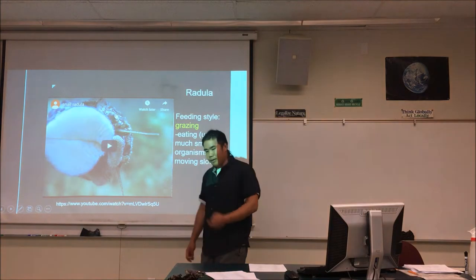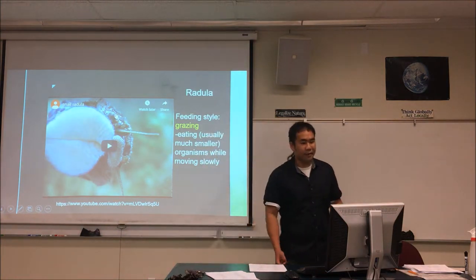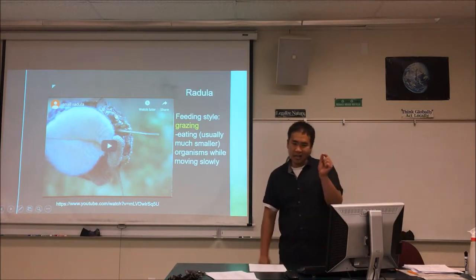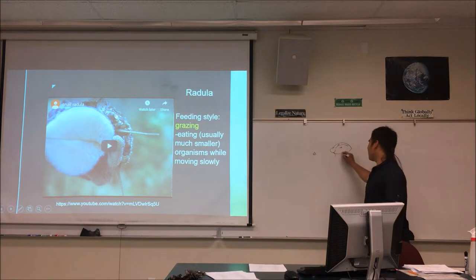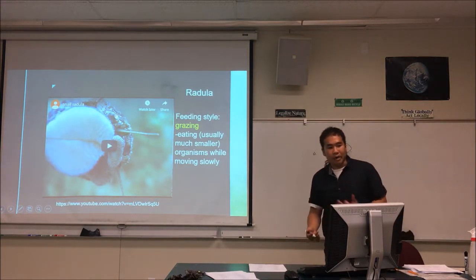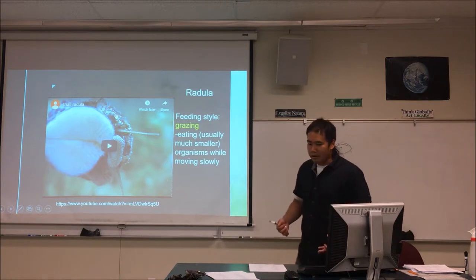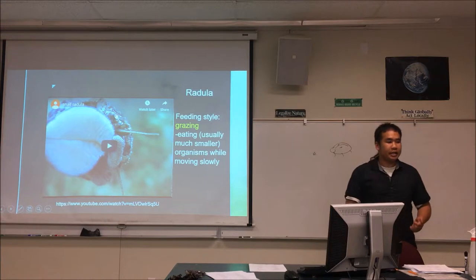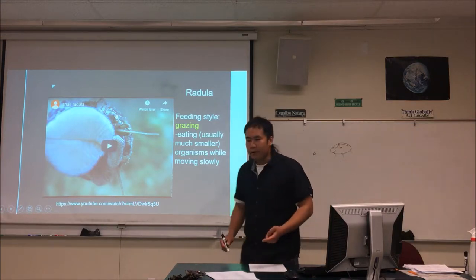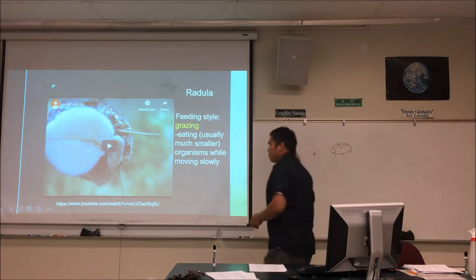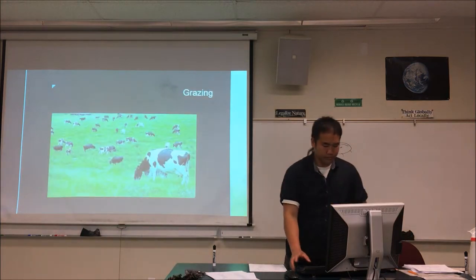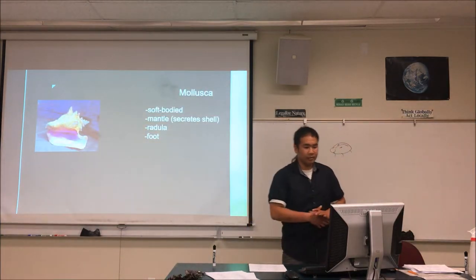Cows are the classic example of grazing — walking around slowly eating grass, picking it up, because the grass is not going to get away from them. But grazing doesn't have to involve plants. Anything significantly slower than you counts — even an animal. Ladybugs, for instance, eat aphids, which are so slow the ladybug just walks around and slurps them up. Anything that either doesn't move or is significantly slower than you, where you can leisurely pick it up, is grazing. That's what snails do.